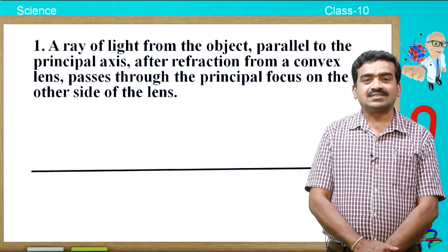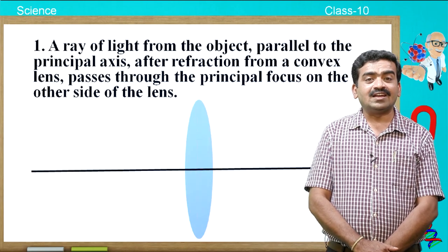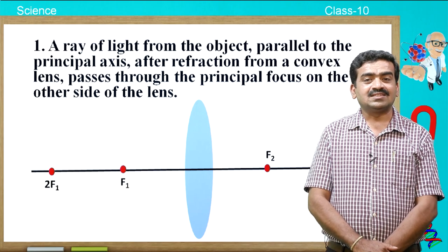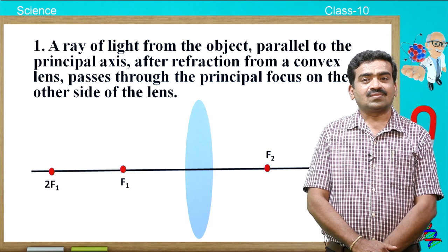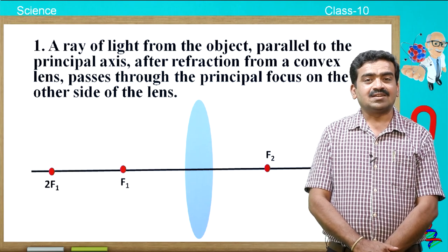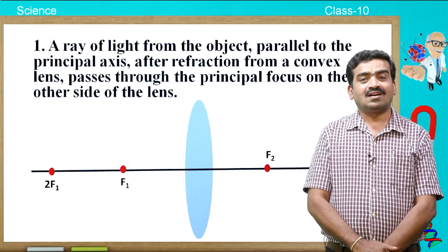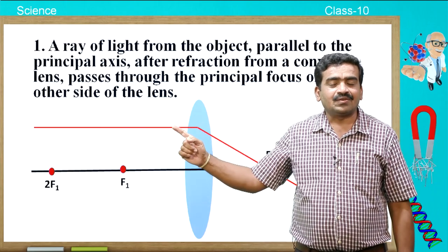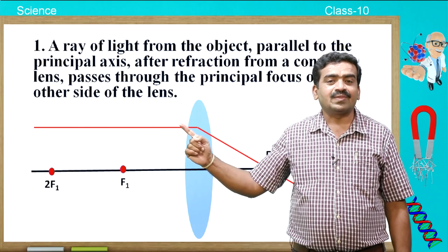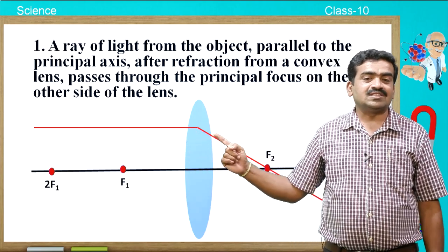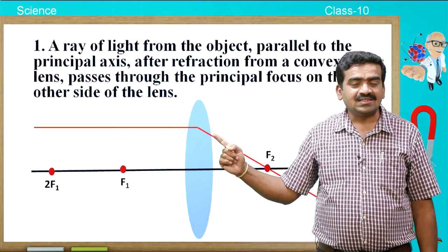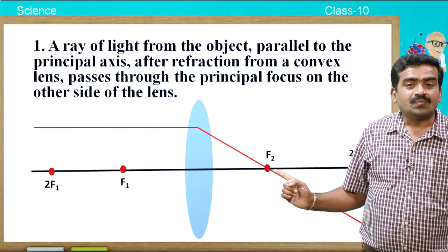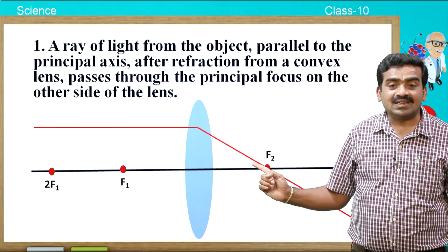The first important thing is: a ray of light from the object parallel to the principal axis, after refraction from a convex lens, passes through the principal focus on the other side of the lens. That means when a ray of light passes parallel to the principal axis through a convex lens, after refraction it passes through the principal focus on the other side of the lens.